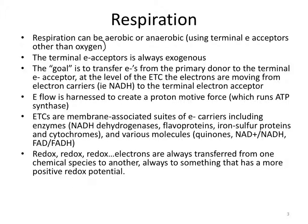The terminal electron acceptor in respiration is always exogenous, or external to the process. The goal in respiration is to transfer electrons from the primary donor to the terminal electron acceptor. At the level of the electron transport chain, the electrons are moving from electron carriers such as NADH to the terminal electron acceptor. During glycolysis and the Krebs cycle, we've stripped electrons off the original primary donor and its subsequent metabolites.